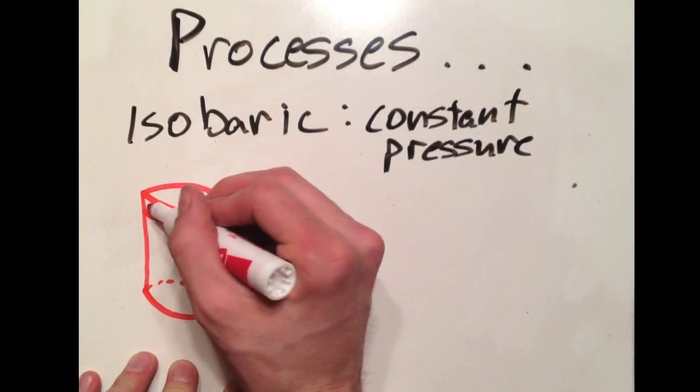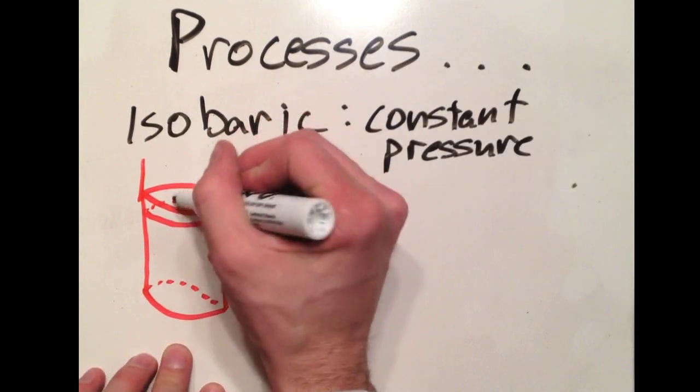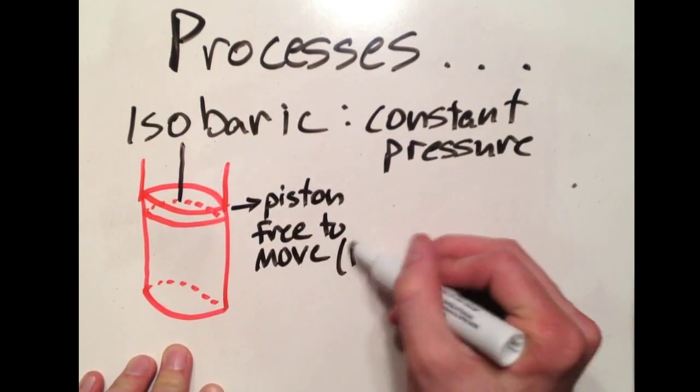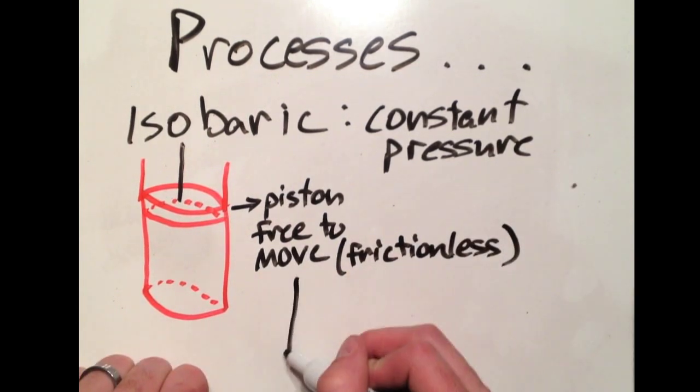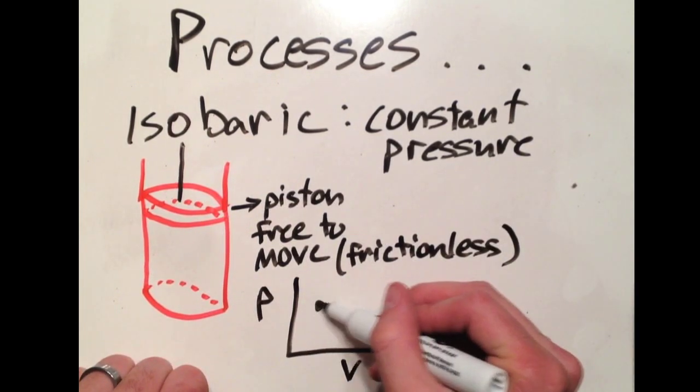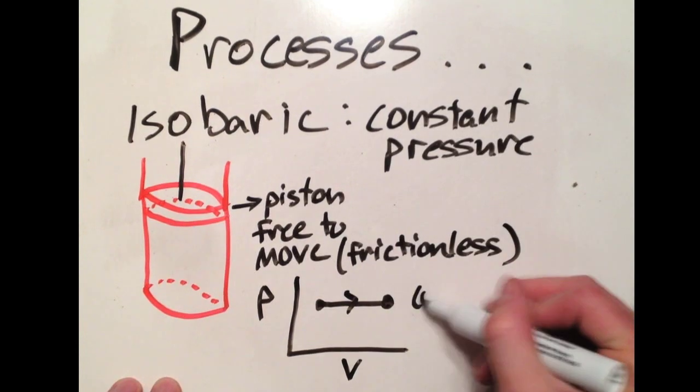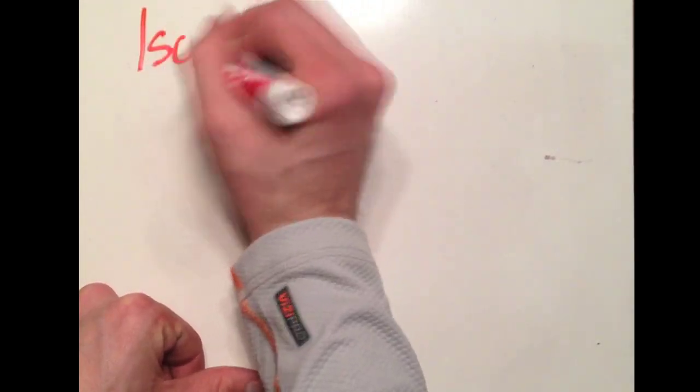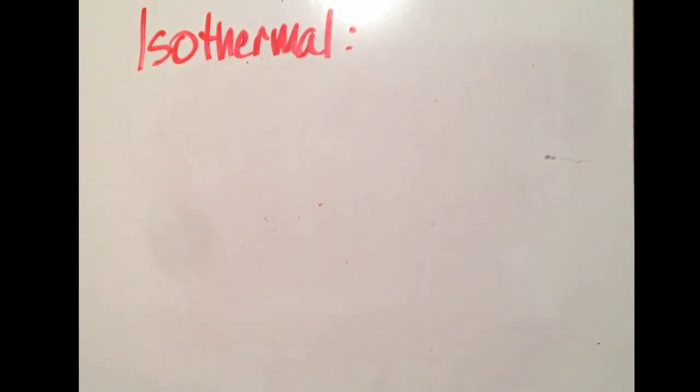How this happens, you have a piston that is free to move above a gas. The atmospheric pressure doesn't change, and because the piston can move, the pressure inside also does not change. That piston moves up and down, and your PV diagram graph looks something like this.